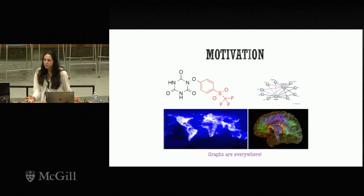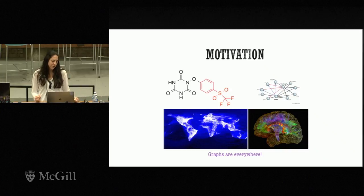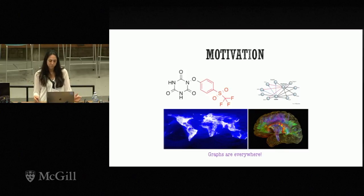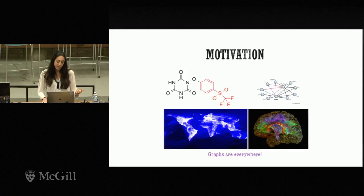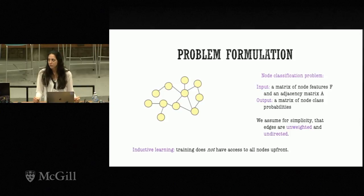Graph structured data can be found everywhere, including in the biomedical domain. We can think of molecules represented as graphs, chemical compounds, brain connectomes, protein-to-protein interaction networks, gene interaction networks, and networks depicting epidemiology. Given this motivation, we want to see what kinds of deep learning models are well suited for graph structured data. The problem we tackle is node classification — assigning one label to each node of a graph.